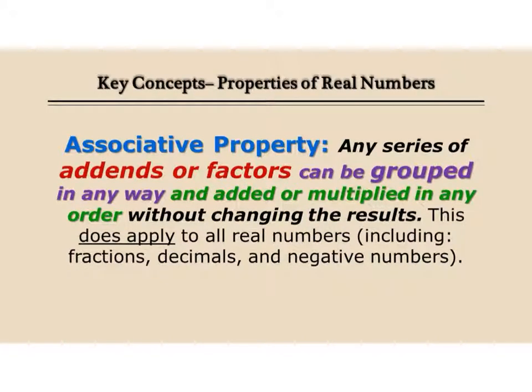The associative property states that if you add or if you multiply groups of numbers, three, usually three is what you're going to see on a test or in a lesson, you can group them together or put parentheses around two of them, any two, and it doesn't change the answer. It applies to all real numbers.